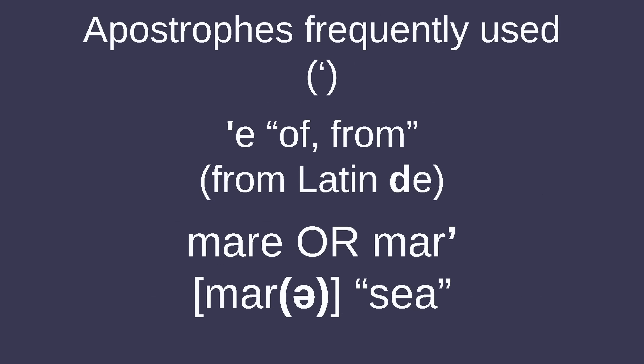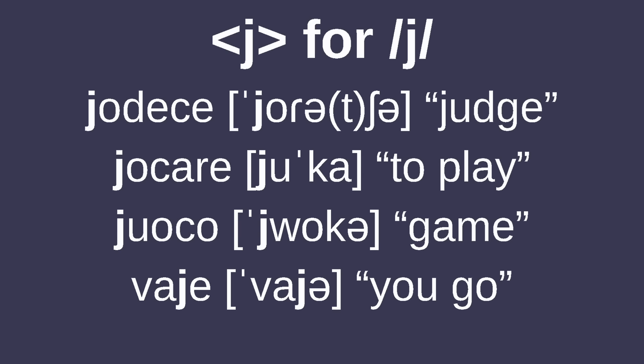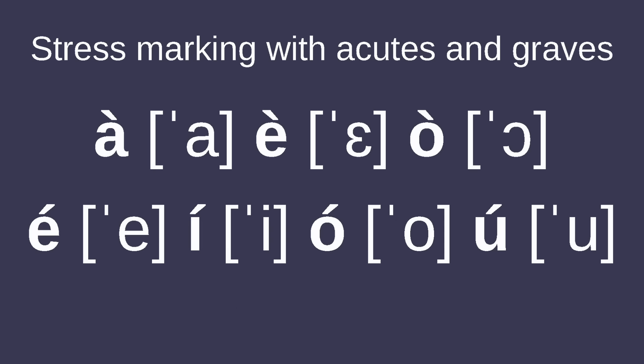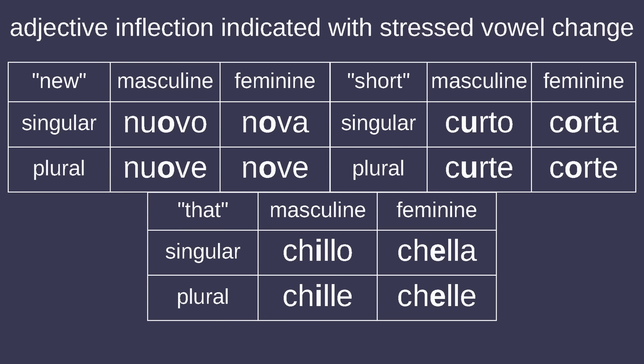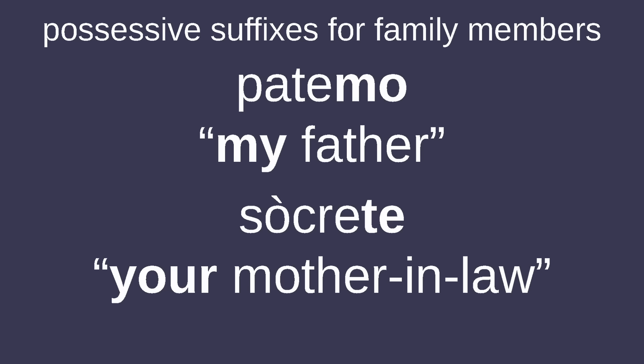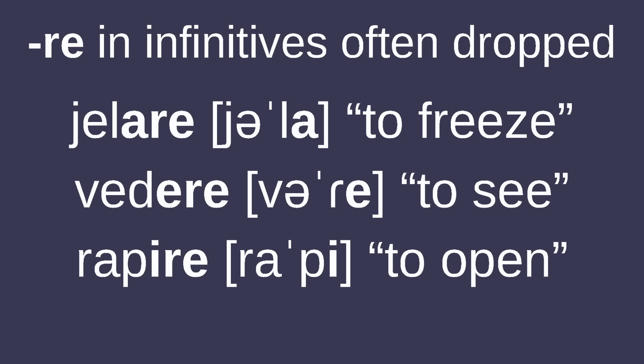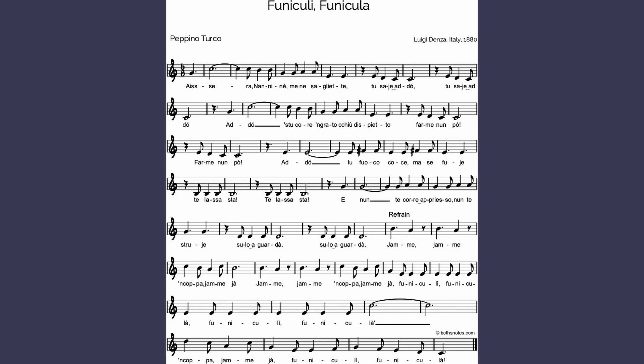The apostrophe is used a lot when writing Neapolitan, when denoting reduced vowels or dropped consonants. The letter J is used to represent the sound /j/, like in most Germanic and Slavic languages. Neapolitan uses the grave accent to mark stressed open vowels A, E, and O, but typically uses an acute for E, I, O, and U. Indefinite articles start with N instead of something like UN, and definite articles start with vowels before consonants and 'le' before nouns starting with vowels. Because word-final vowels are unstressed schwa, adjective inflection for gender is typically indicated with a change in the stressed vowel. Neapolitan has a set of possessive suffixes which are used when talking about family members. While formally infinitives end in -ARE, -ERE, and -IRE like in Italian, the -RE is often dropped, leaving A, E, and I. I'm legally obligated to mention that 'Funiculì Funiculà' was written in Neapolitan.